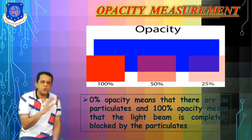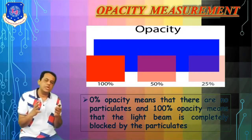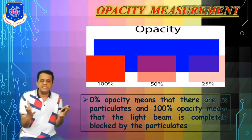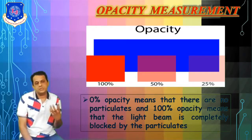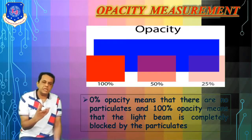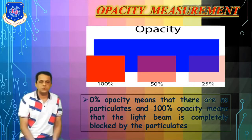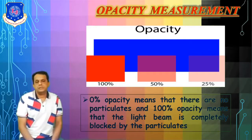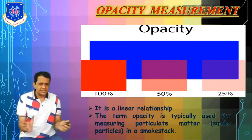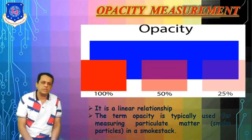So 0% opacity means there are no particulates in the liquid or in the water. Basically, this opacity measurement is for analyzing liquid — most of the time it is applicable for water management systems. If you want to check the quality of drinking water, the quality is indicated by the particles deposited in the water or whatever liquid is used. So 0% opacity means no particles and entire light passes through, while 100% means the light beam is completely blocked by particles. It is a linear relationship, and the term opacity is typically used for the measurement of particulates.